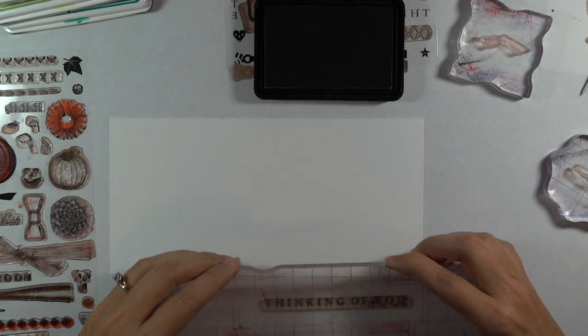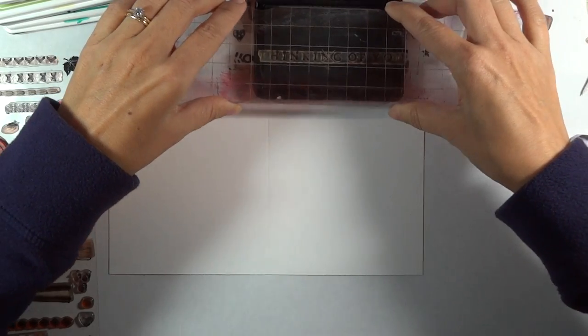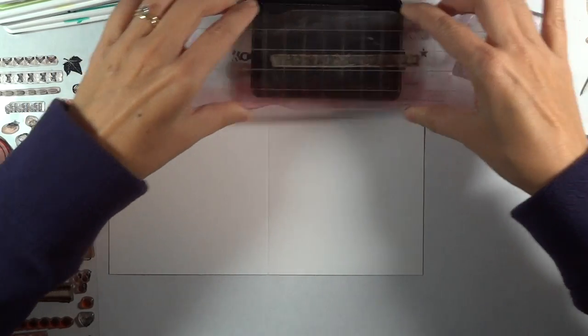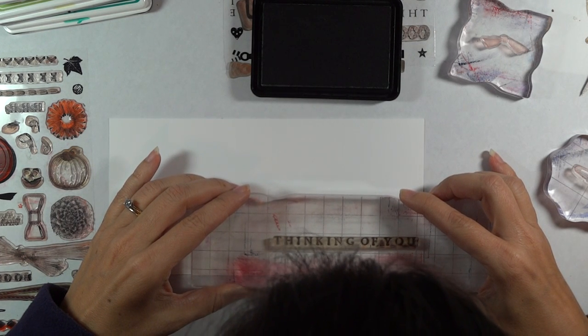And I want to make sure that it is on there straight. So I lay it on my desktop in case it has a bend in it. And about a third of the way, maybe more like a quarter.